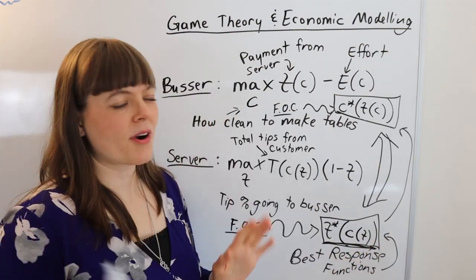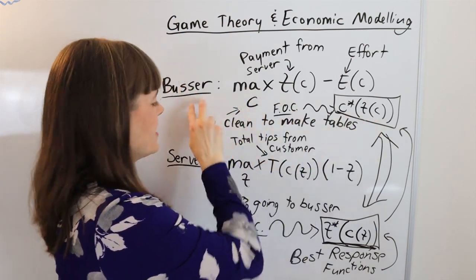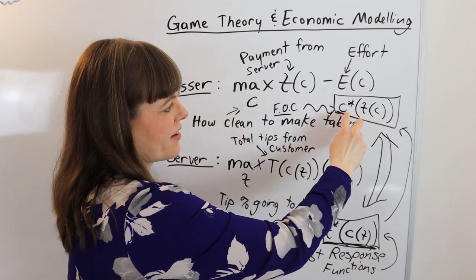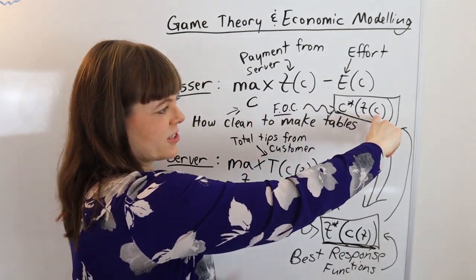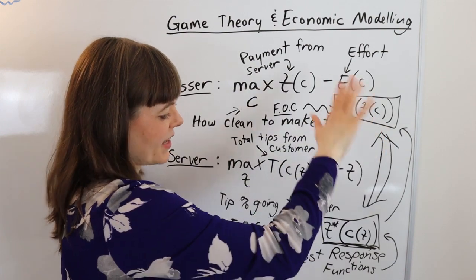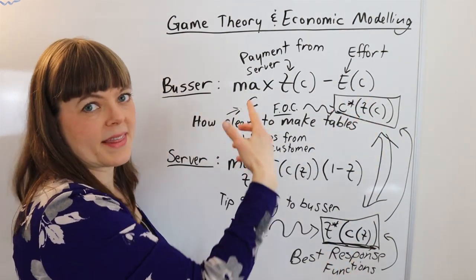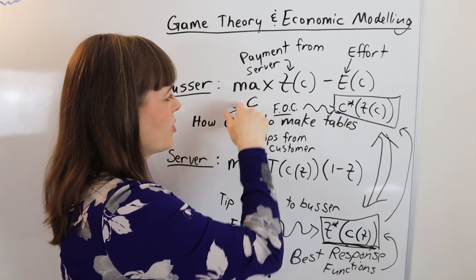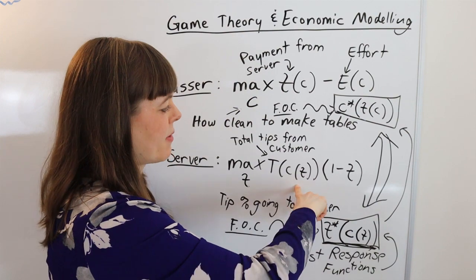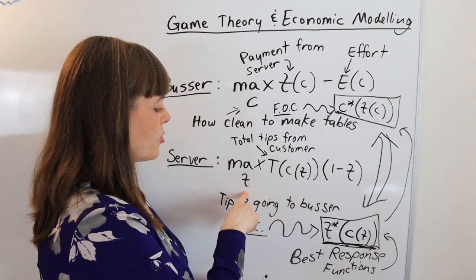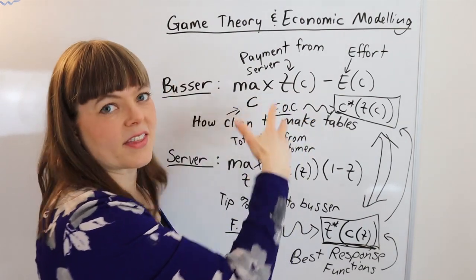To summarize: the solution to each player's model gives us a best response function, which is a function of the other person's choice, which is a function of your own choice. The key is the best response functions. And in terms of how they appear in models: the choice variable in one person's model is endogenous in the other person's model — and that goes both ways.